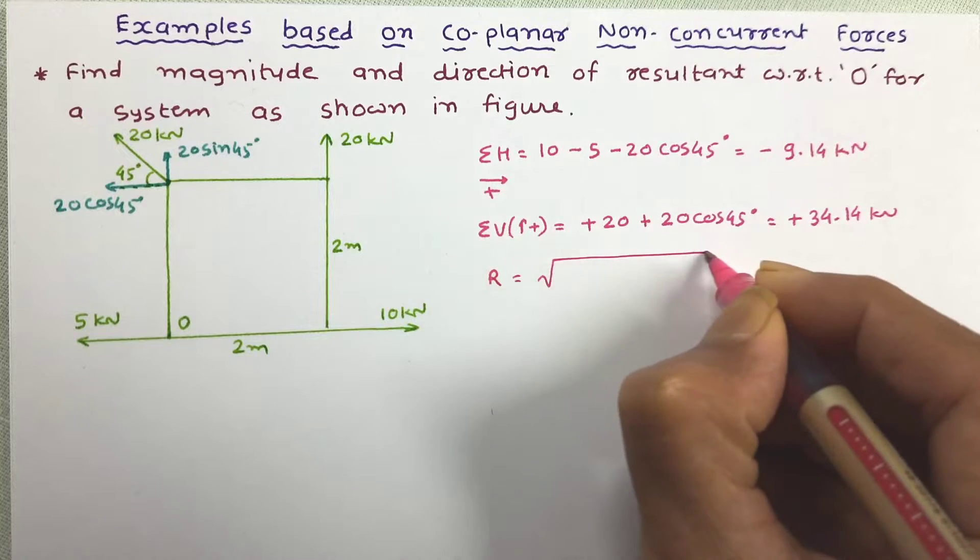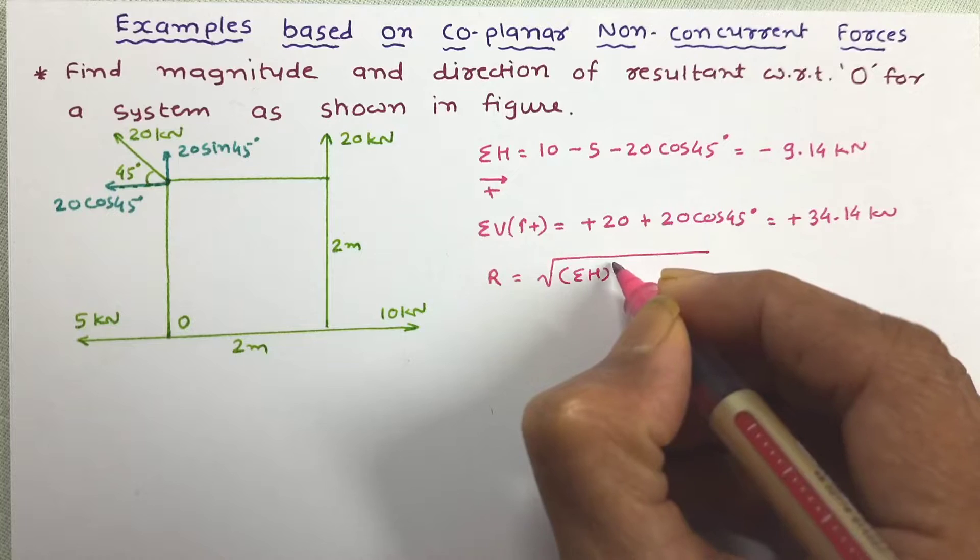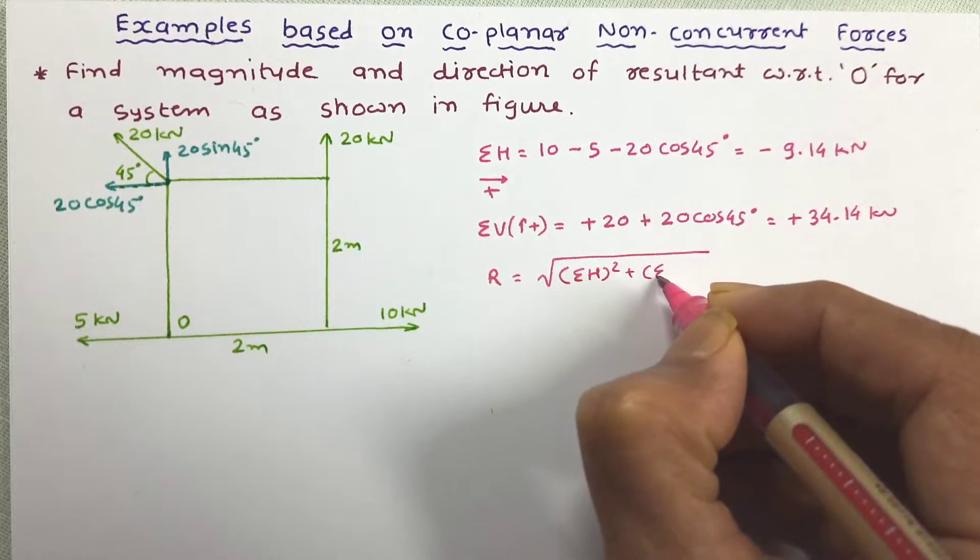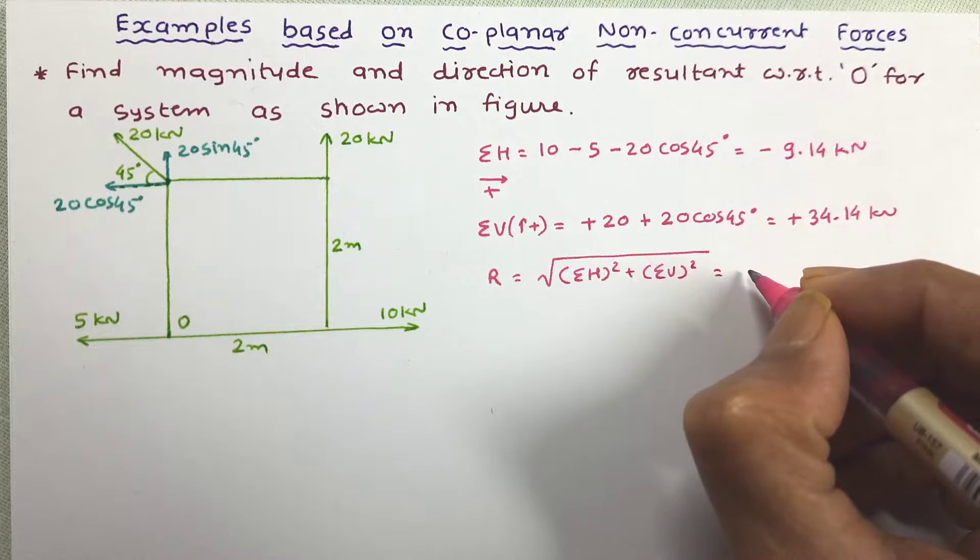By the equation of resultant, that is sigma h whole square plus sigma v square. Let us equate the value of this.